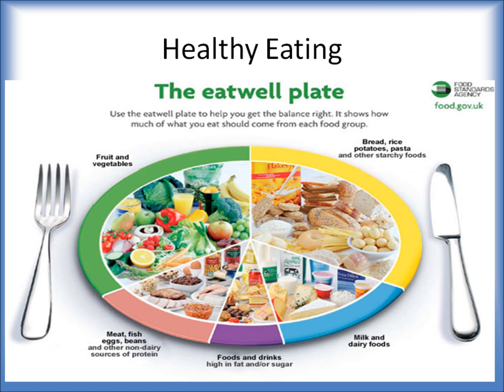This is the Eat Well Plate. It tells us the proportions of the food groups and how much we should be having of them each day. As you can see, we need a lot more of the fruits and vegetables and the starchy carbohydrates like bread, rice, potatoes and pasta. Slightly less of the meat, fish, eggs and beans, and the dairy foods, but they're still very important groups. And finally, very little — but you're still allowed to have it every so often — the high-fat and high-sugar foods.